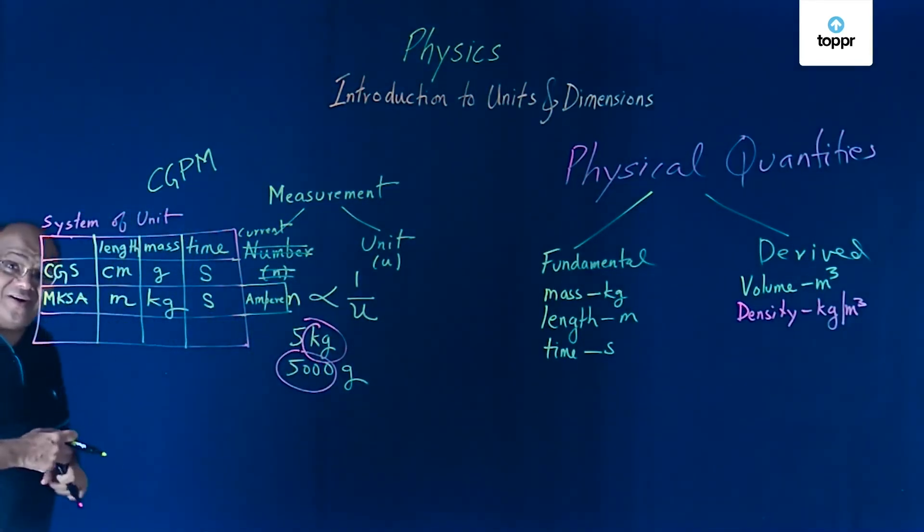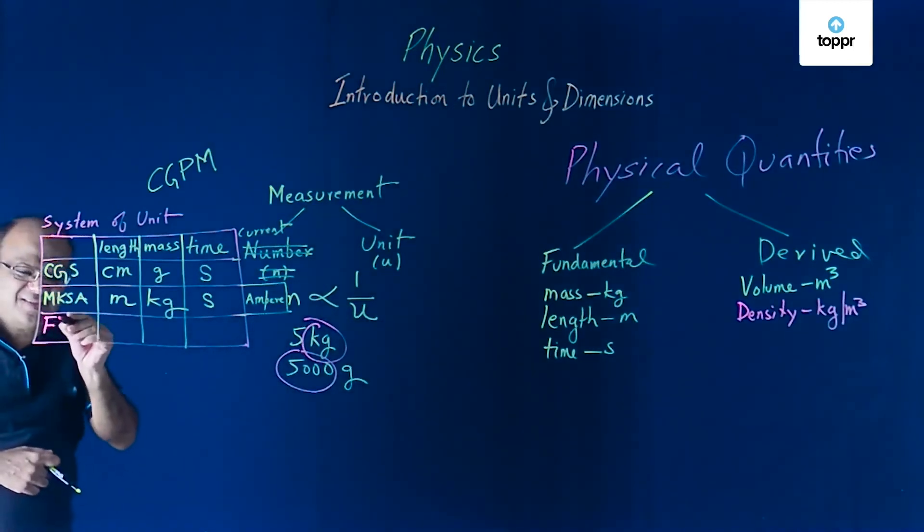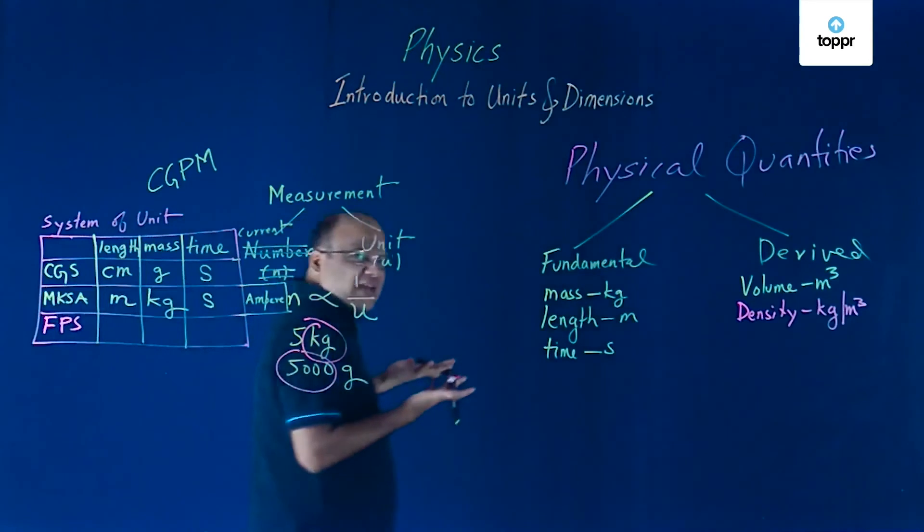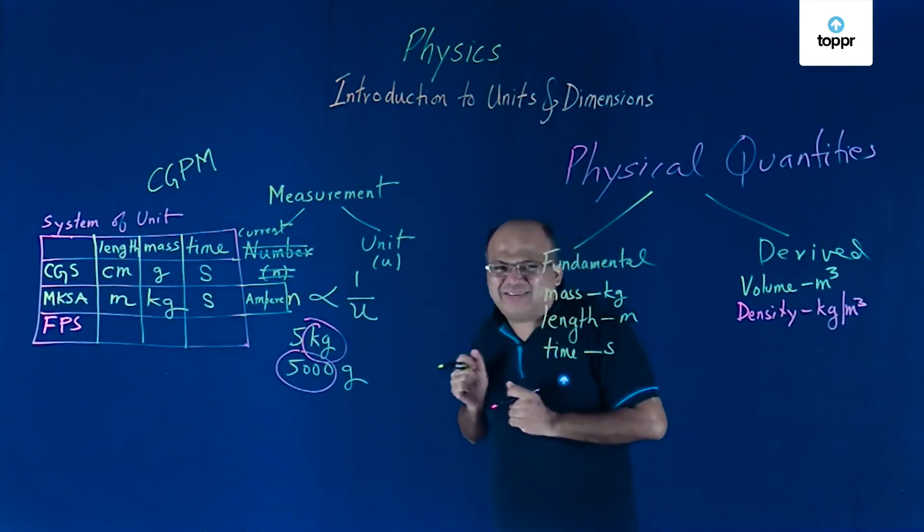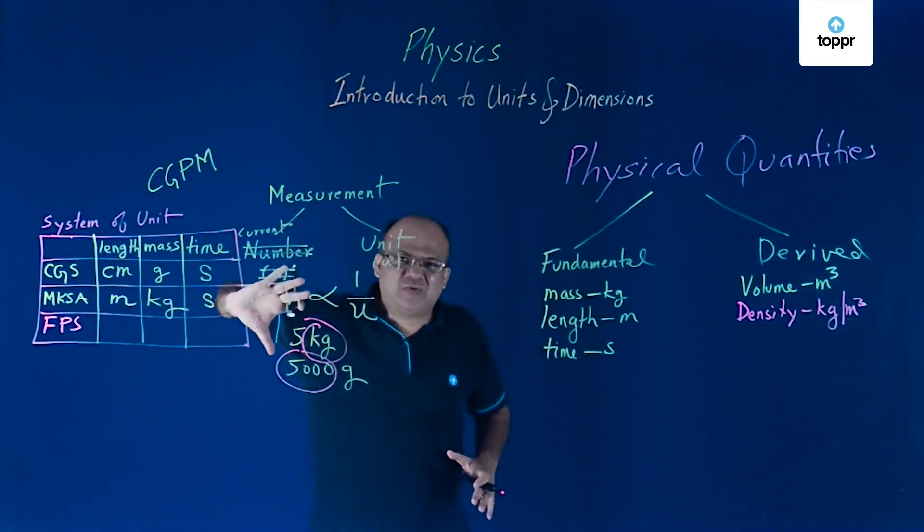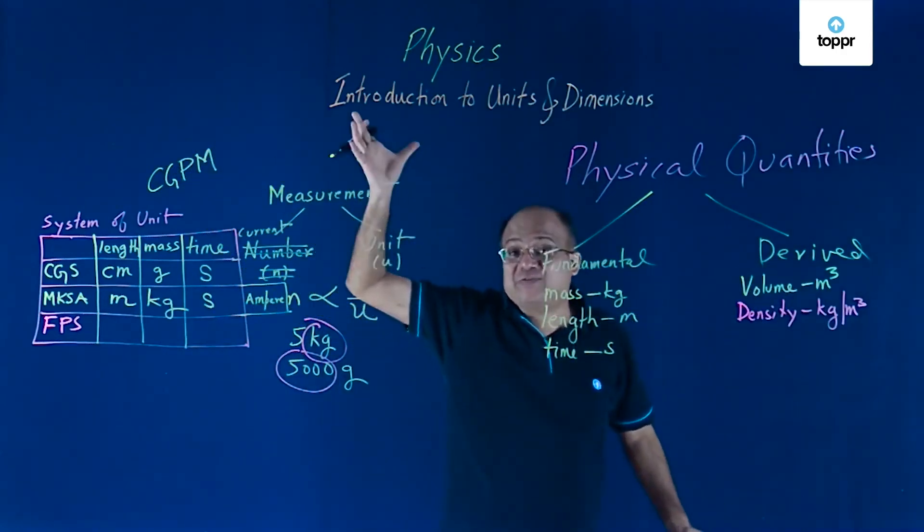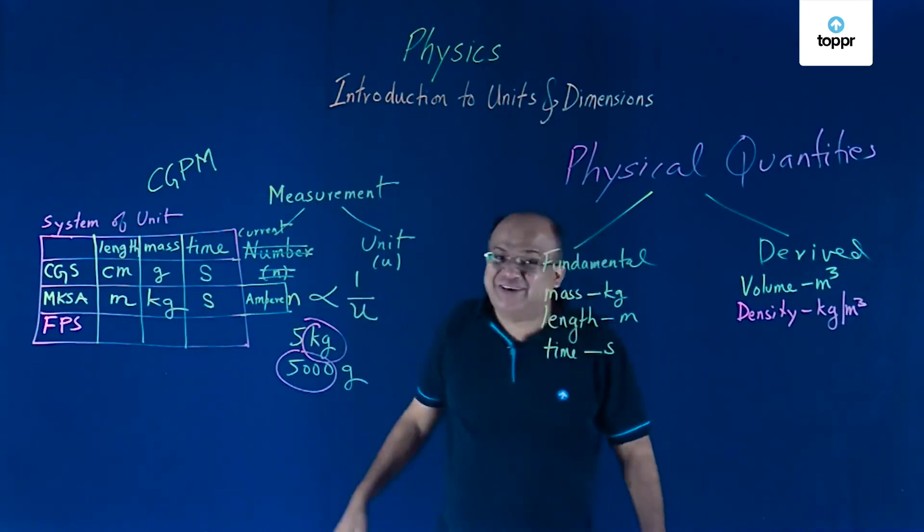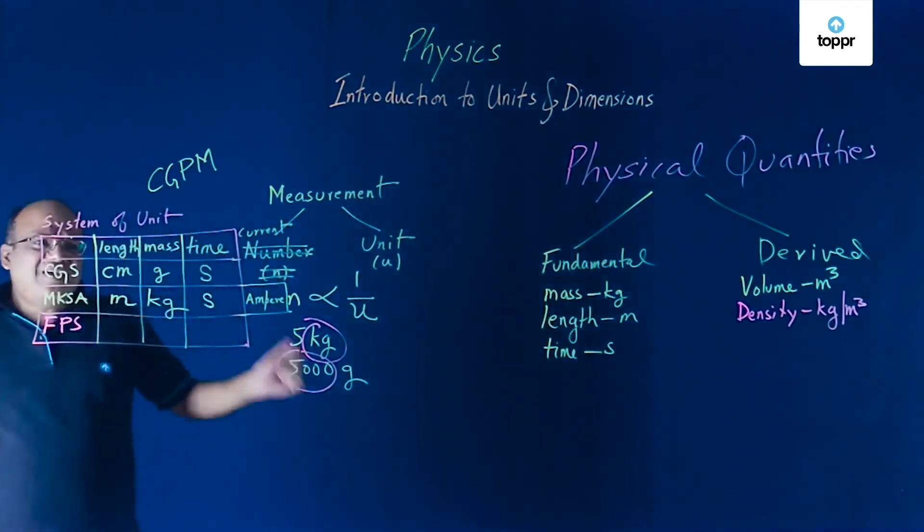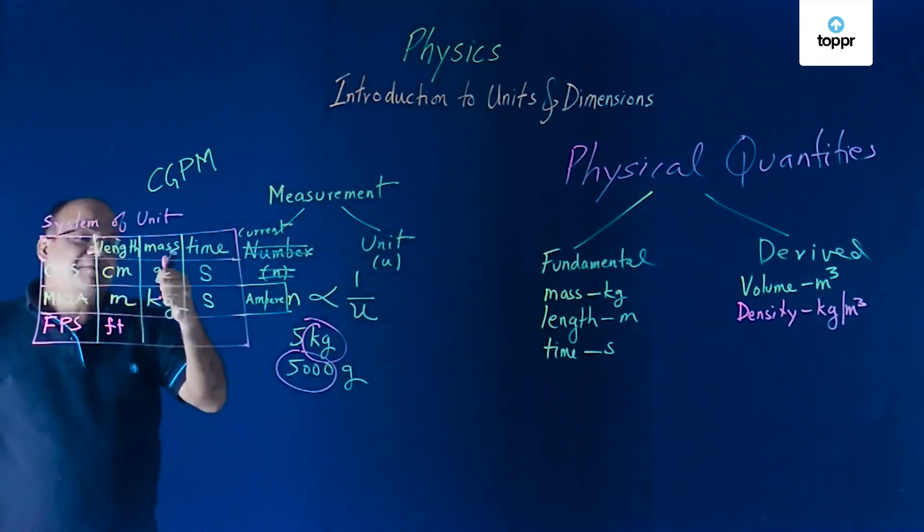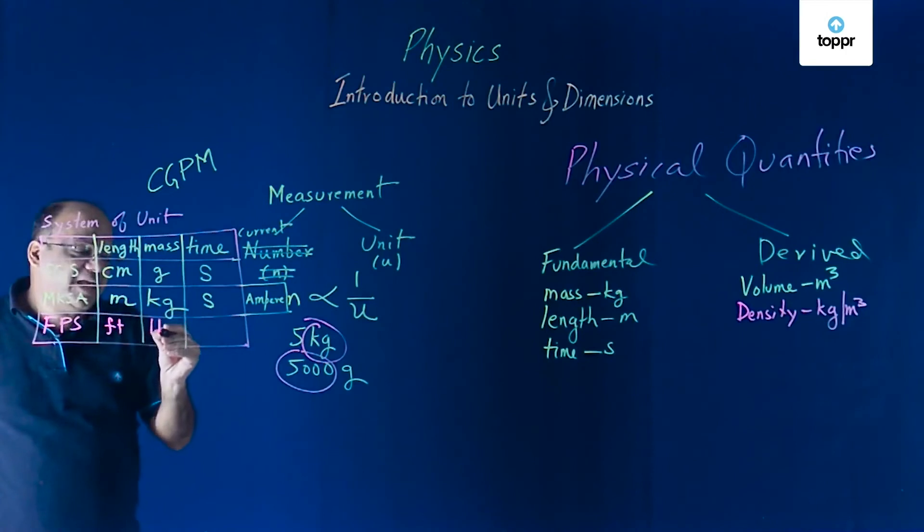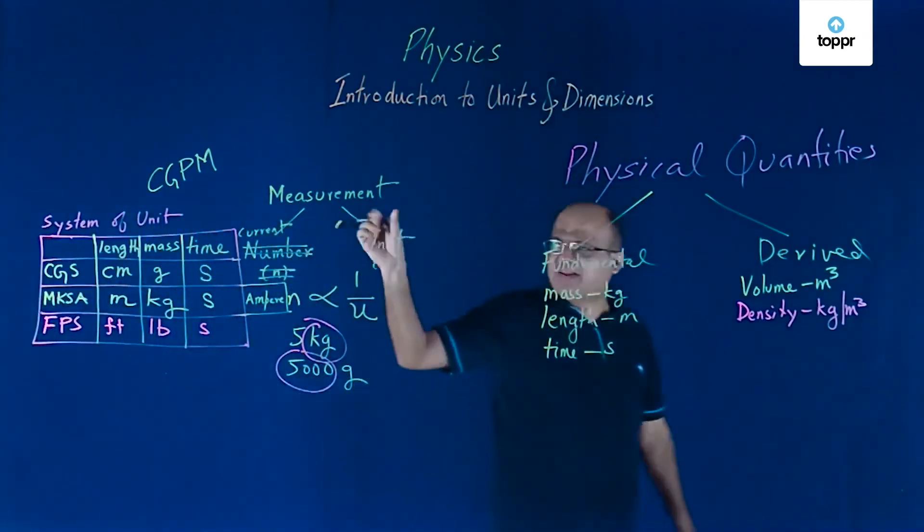Then we have got one more system of units called FPS. This is the most uncivilized form of unit. The conversion factors are very difficult to remember. Earlier, the British people used to use FPS. They ruled the world. Now, Americans still use FPS in their day-to-day life. Unit of length here is feet. Singular is foot, plural is feet. Mass is pounds, pounds symbol is LB. And time is again seconds. So these three system of units are there.